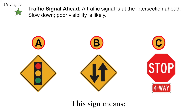Traffic signal ahead. A traffic signal is at the intersection ahead. Slow down. Poor visibility is likely. Correct answer is A. Traffic signal ahead.